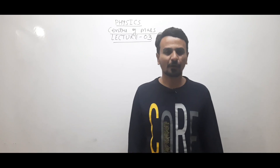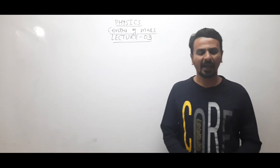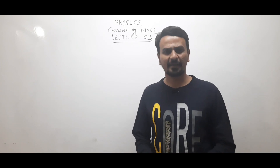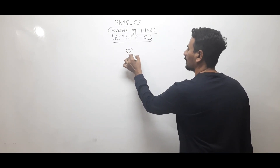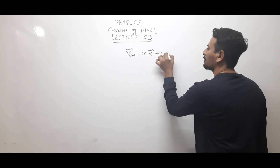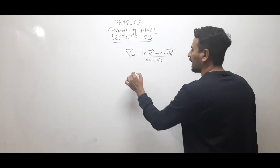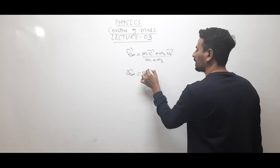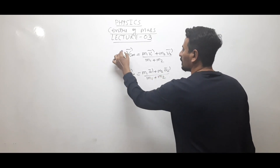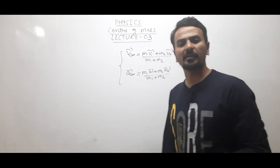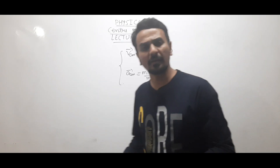This is lecture number three of center of mass. In the previous lecture we discussed velocity of center of mass, acceleration of center of mass, and I also said that there are two types of forces: internal and external. We derived the equation: velocity of center of mass equals m1v1 plus m2v2 upon m1 plus m2 for two particles, and acceleration of center of mass equals m1a1 plus m2a2 upon m1 plus m2. Before starting our discussion of internal and external forces, we'll solve one or two questions based on this formula.